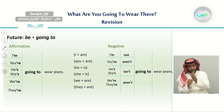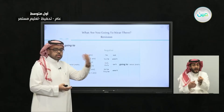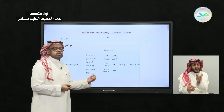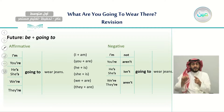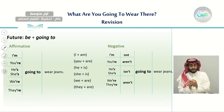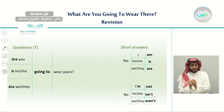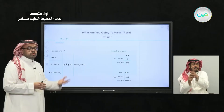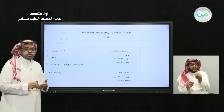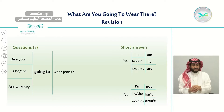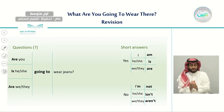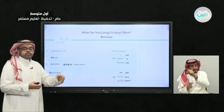If you want to make a negative statement for things that will happen in the future, we add 'not' before 'going to.' For example: I'm not, you aren't, he's not or he isn't, we aren't. And if you want to make a question about what will happen in the future, we also use the verb to be. For example: 'Are you going to wear jeans?' or 'Is he going to wear jeans?'